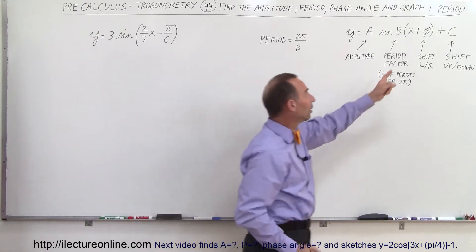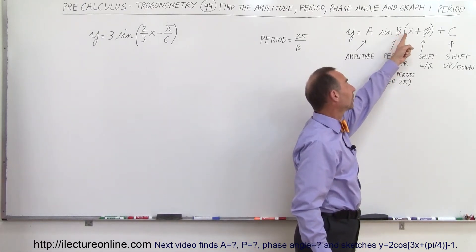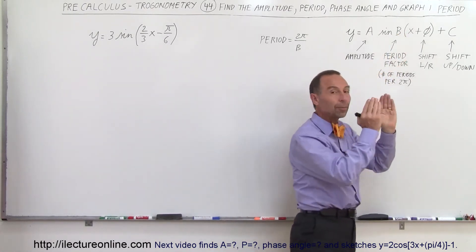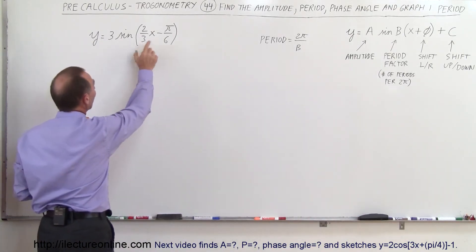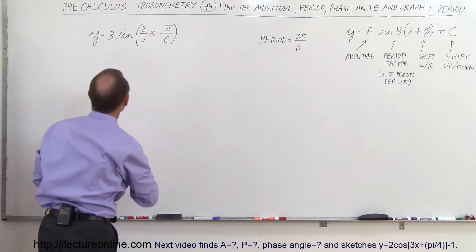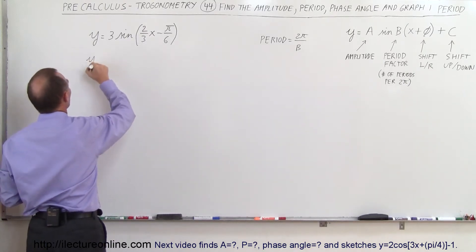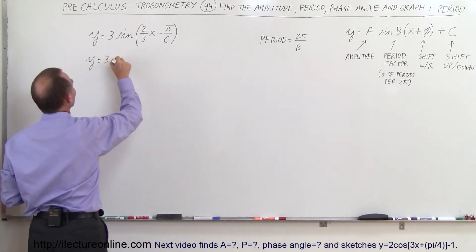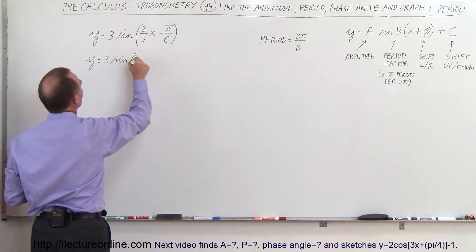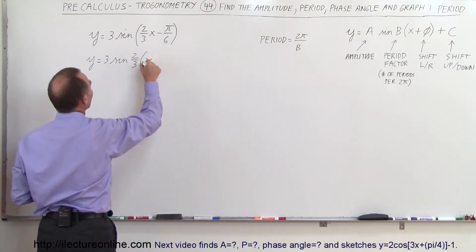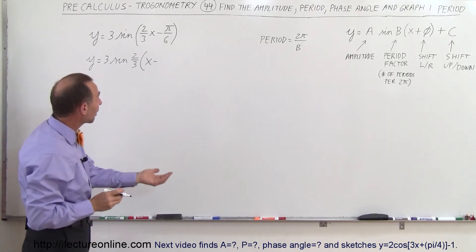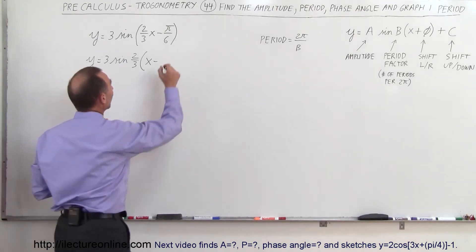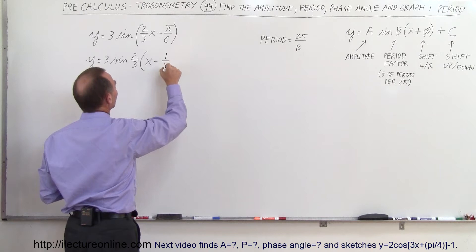You have to factor out the coefficient in front of the x, because you want a 1x inside the parentheses. In order to do that, we have to factor out the two-thirds out of what's inside these parentheses. So this becomes the following function: y equals 3 times the sine of two-thirds times x minus—now this is one-sixth π, when you factor out two-thirds of that, you get one-fourth π.